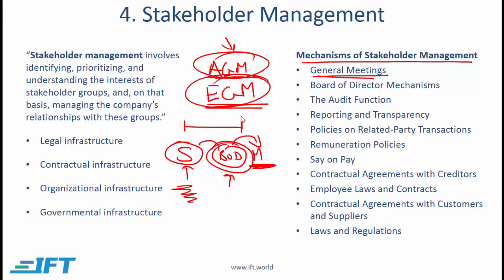In general meetings, some resolutions require only an ordinary majority, such as the election of the board of directors. Other resolutions require a supermajority, meaning two-thirds or 75% of the votes must be in favor for the resolution to pass. Supermajority requirements are intended to help protect minority shareholders.